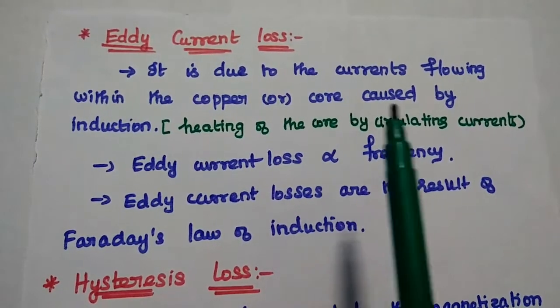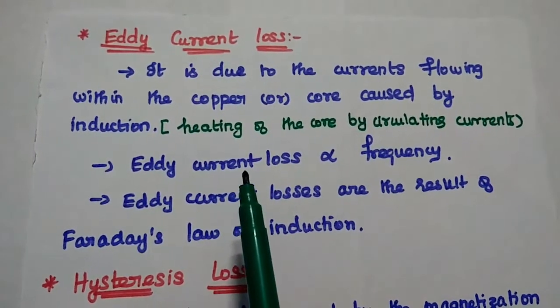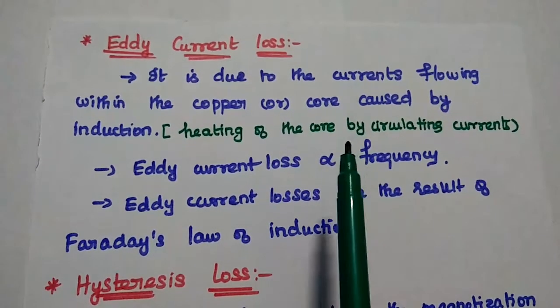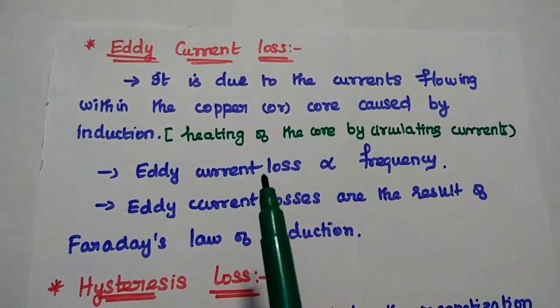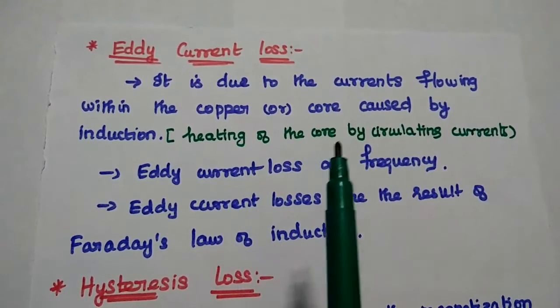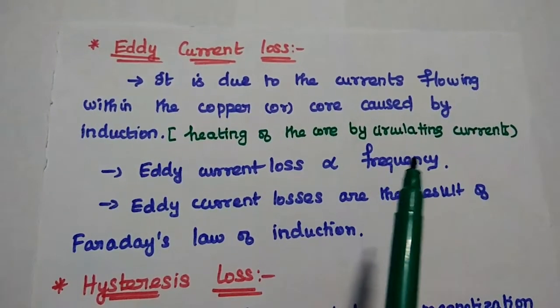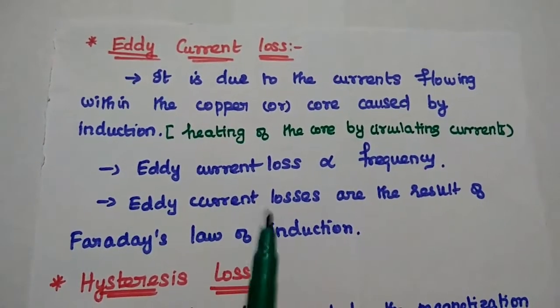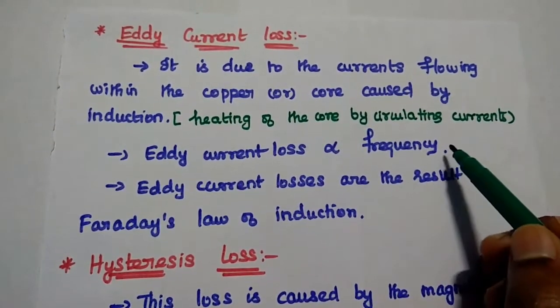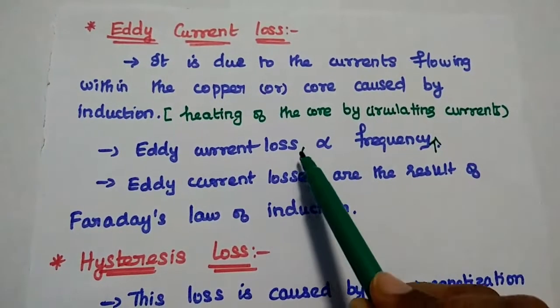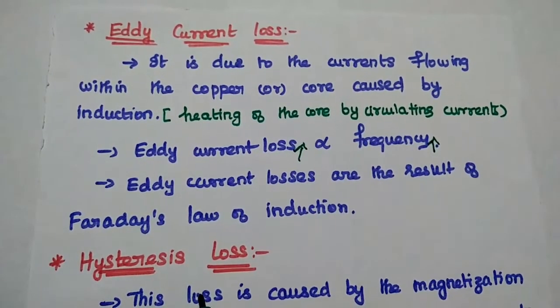Next one is eddy current loss. It is due to the currents flowing within the copper or core winding caused by some inductance. So it can also be represented as the heating of the core by circulating the current within the core. Here the eddy current loss is directly proportional to frequency. If frequency increases, the eddy current loss is also getting increased.